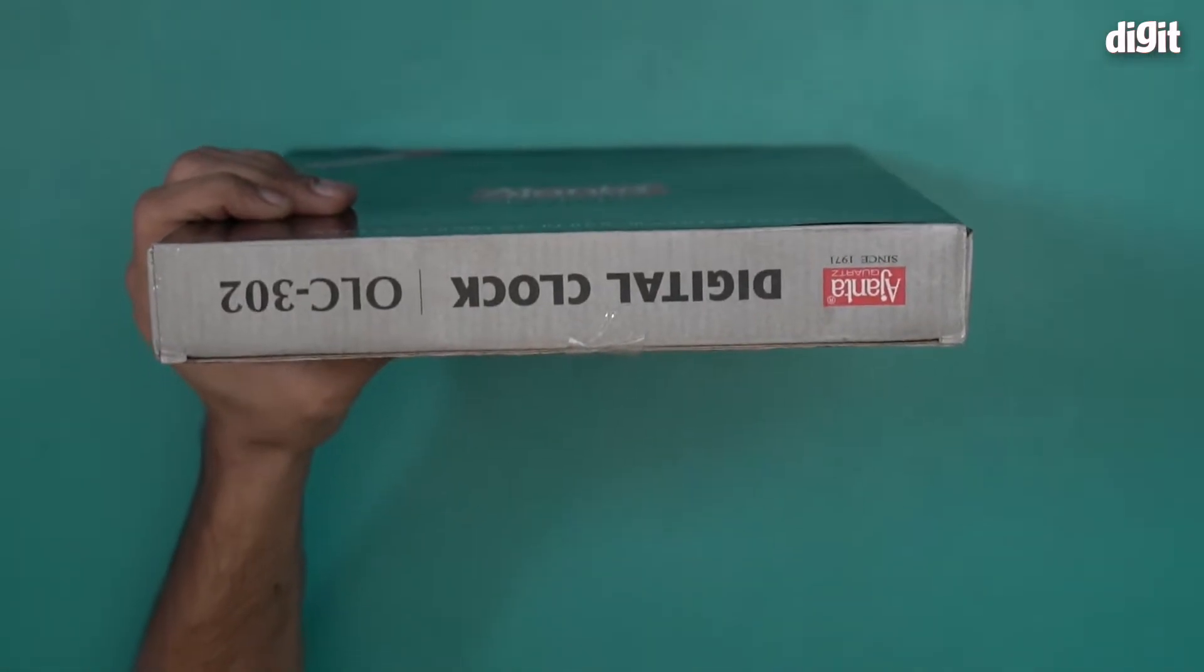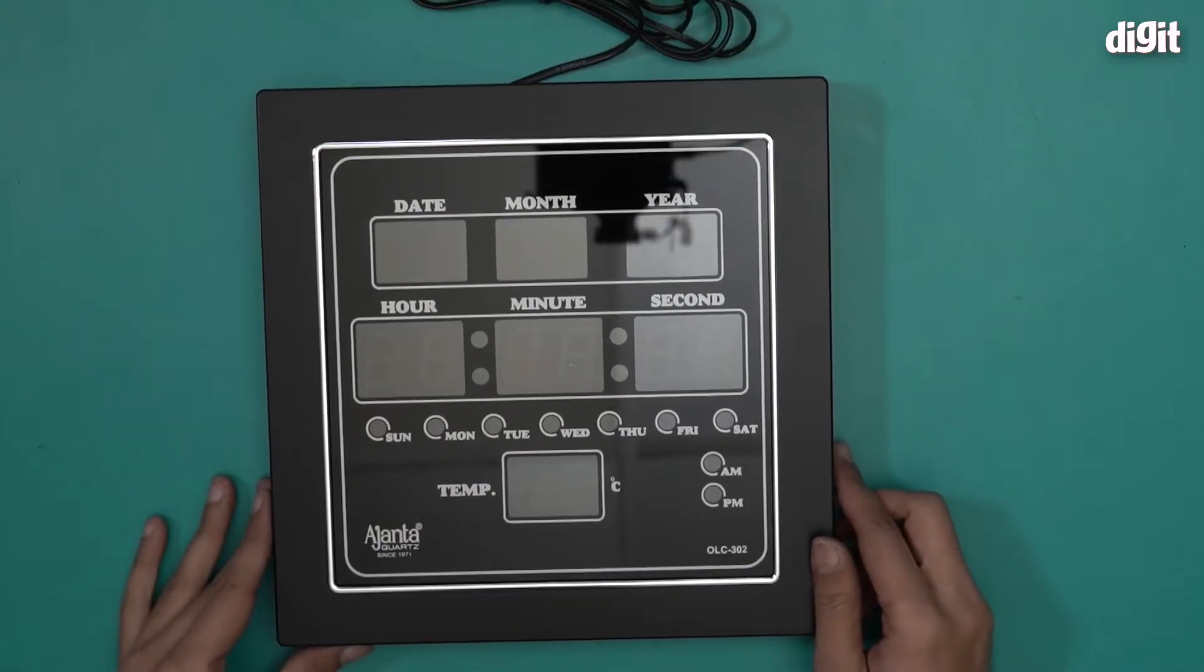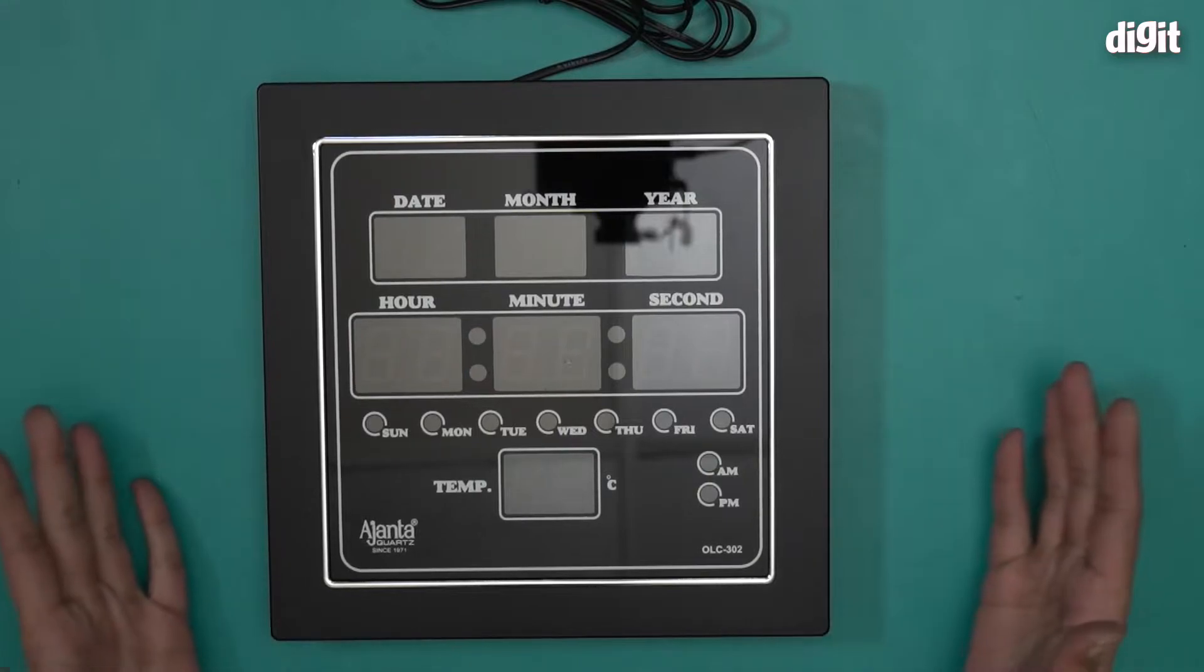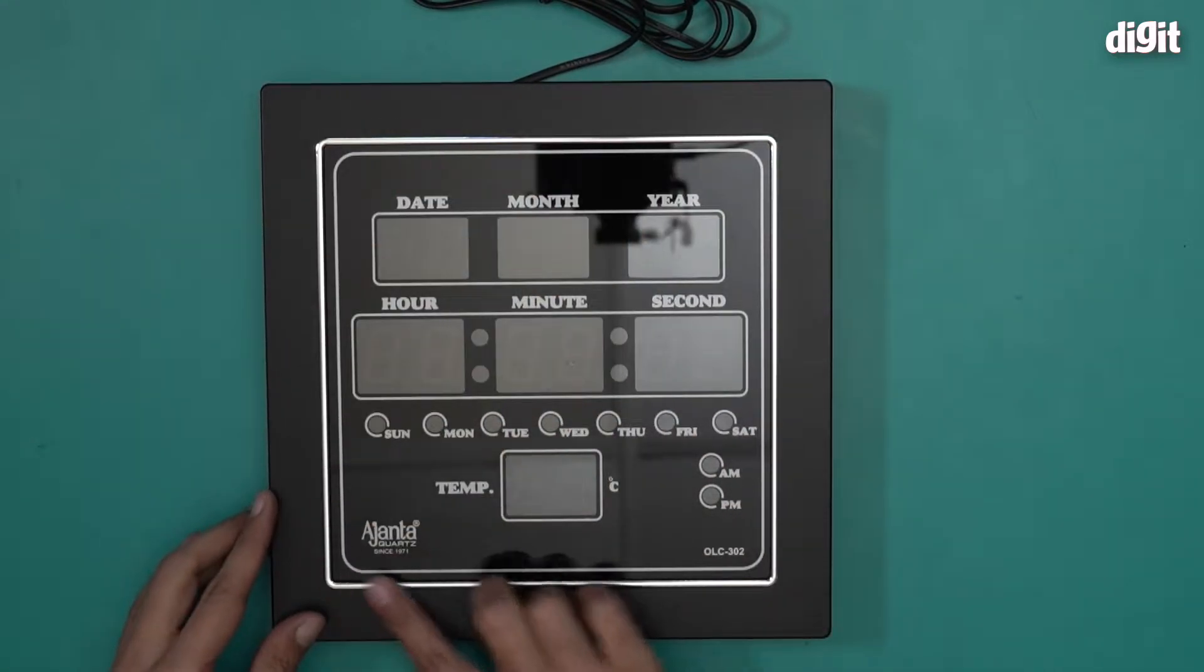I will now open this and show you what's inside. There you go. This is what it looks like. This is the OLC 302, the black variant. It comes with this chrome frame as well.